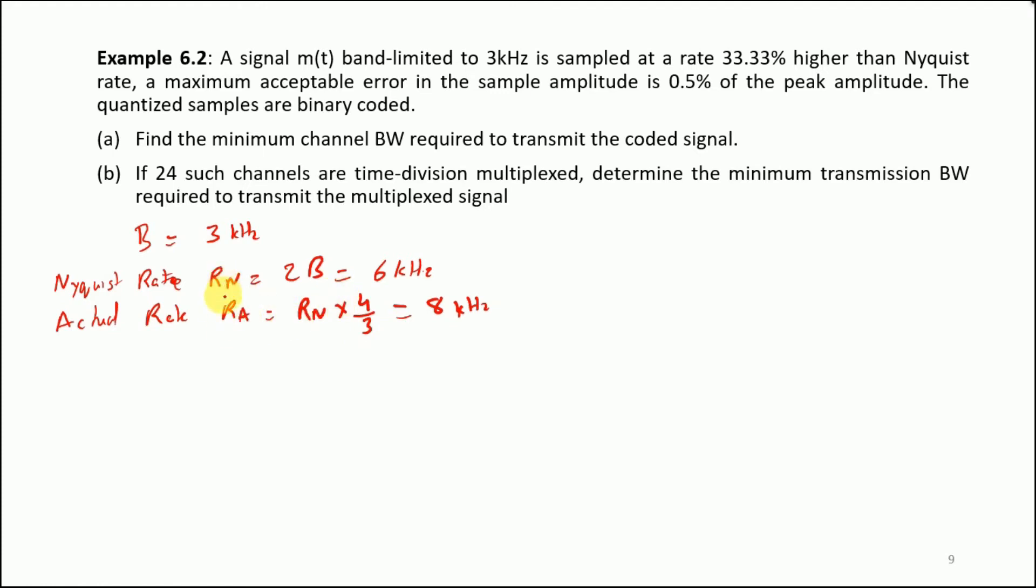Next it says that the maximum acceptable error in the sample amplitude is 0.5% of the peak amplitude. By this what we mean is, taking that example, we say that this is our centroid, and any values in this interval would be approximated to this one. This interval is basically Δv, and over here we have Δv/2. The question states that a maximum acceptable error in the sample amplitude is 0.5% of the peak amplitude.